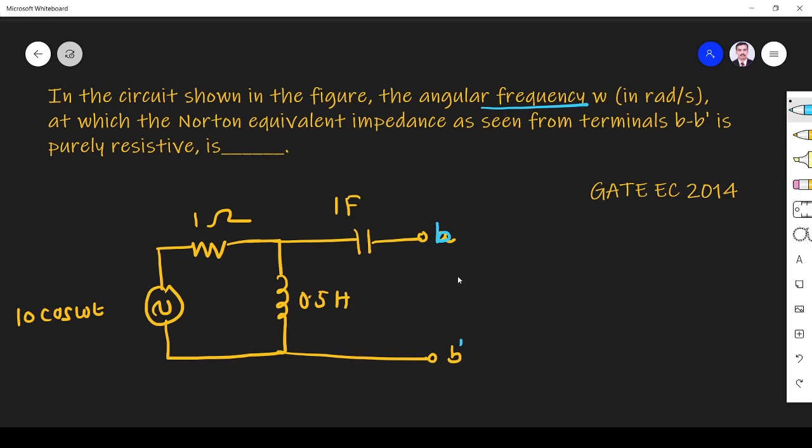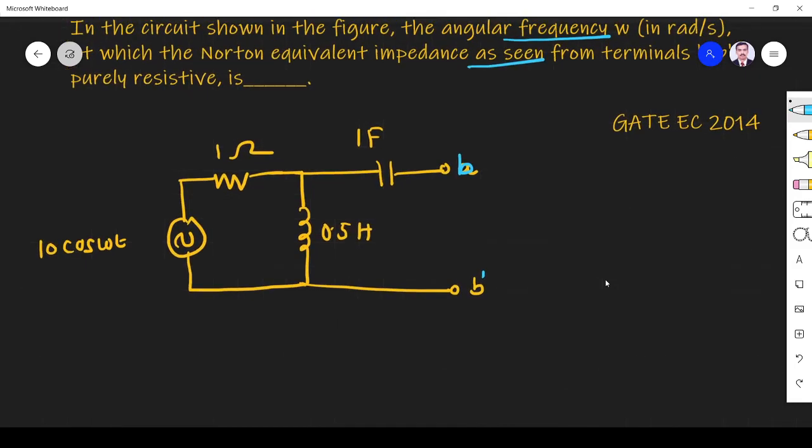Okay, so first we have to find Z_Norton. They told us at what angular frequency is it purely resistive. So at that time, what is the angular frequency? That's what they're asking. Norton impedance...